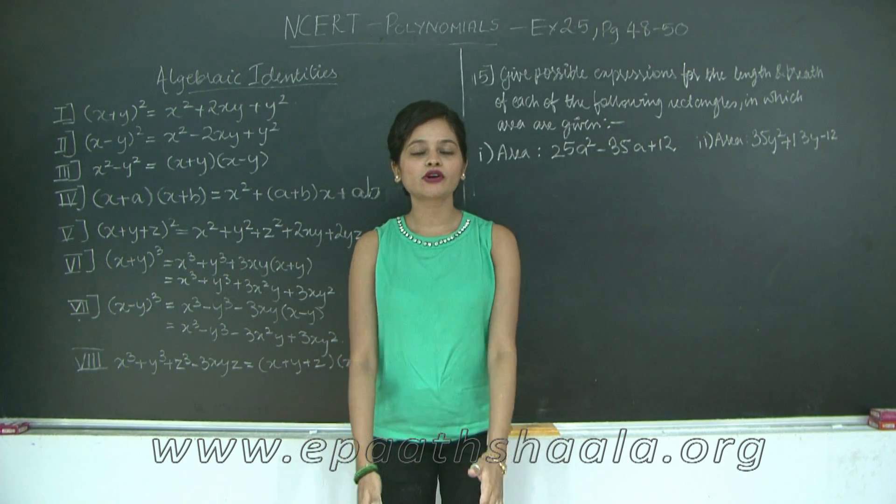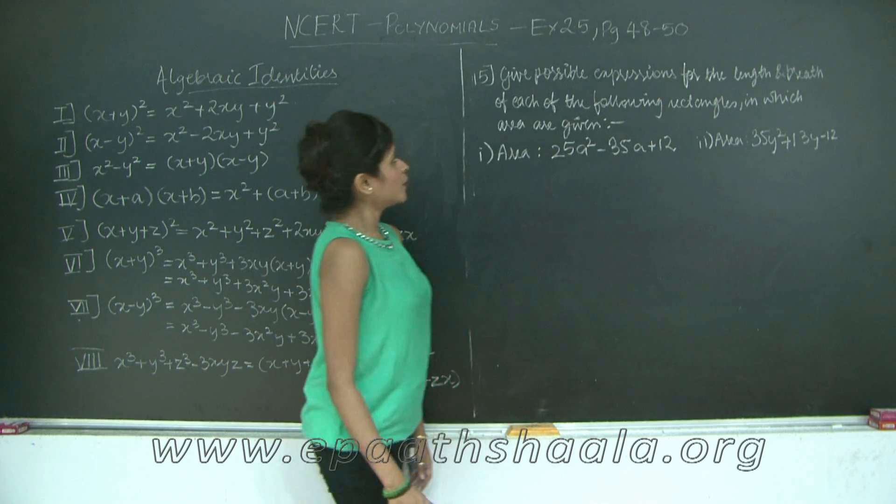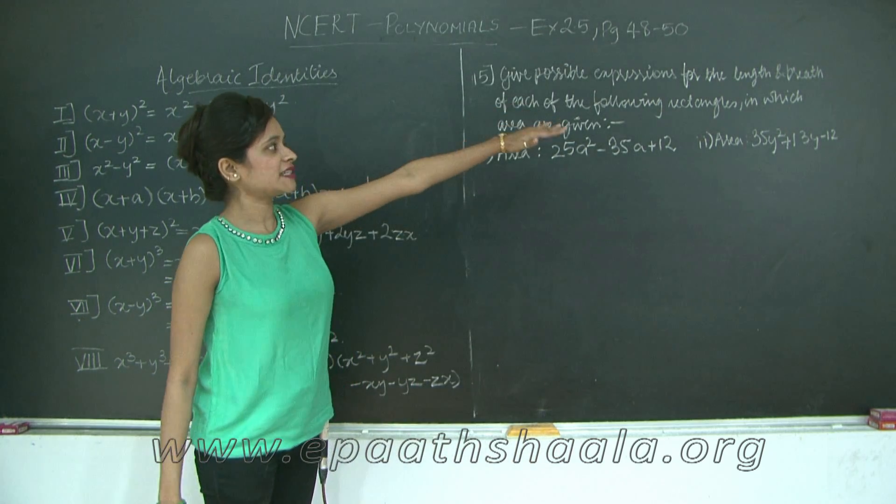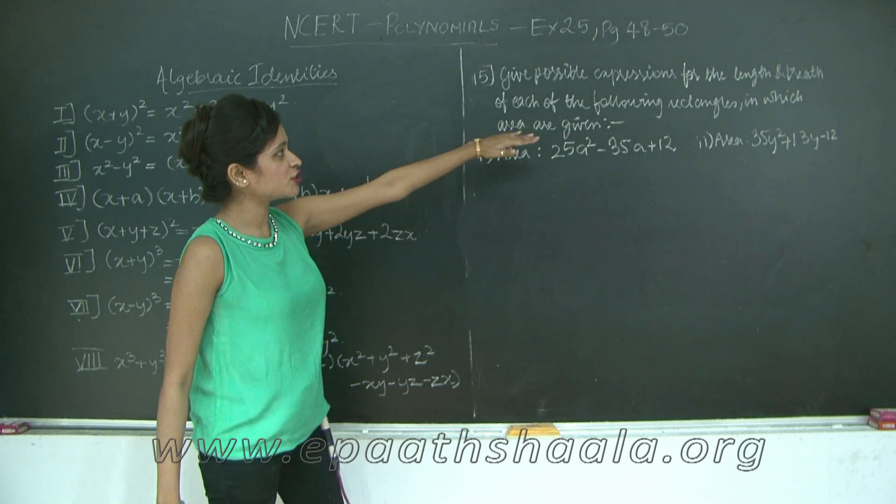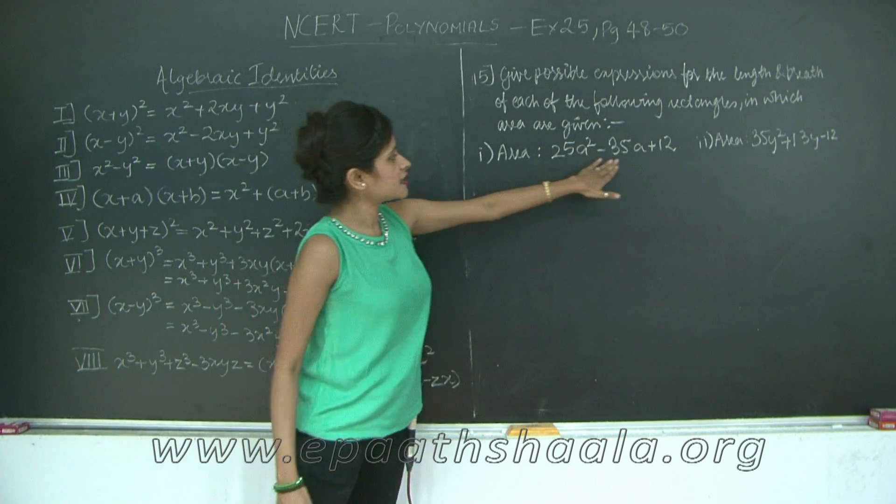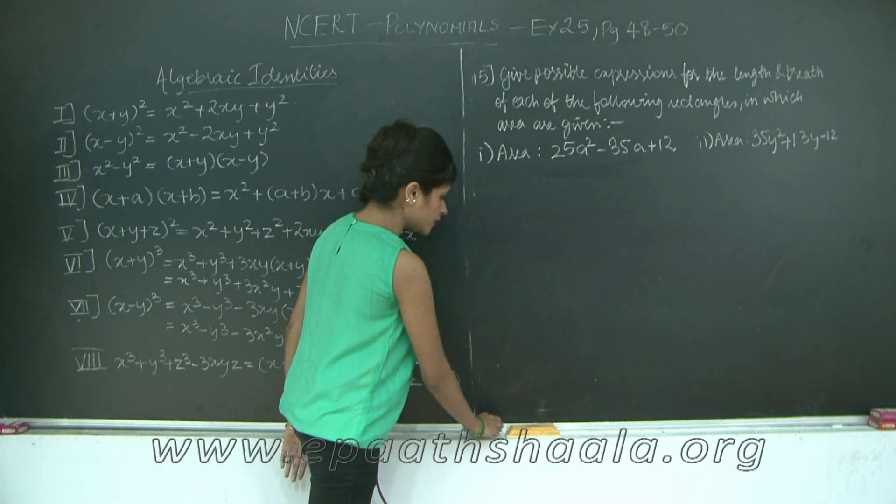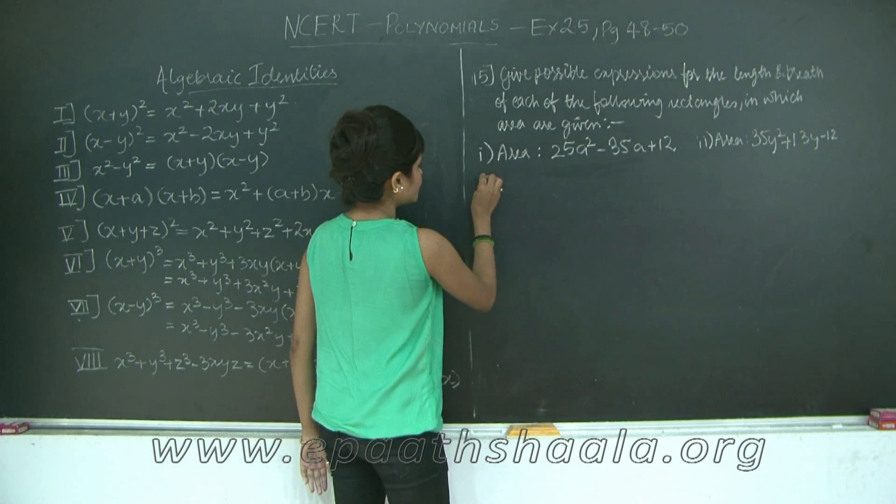Hello students, let's move on to the tricky part of exercise 2.5 of polynomials wherein you have to give possible expressions for the length and breadth of each of the following rectangles in which area are given. This is the area that is given for my rectangle 1.